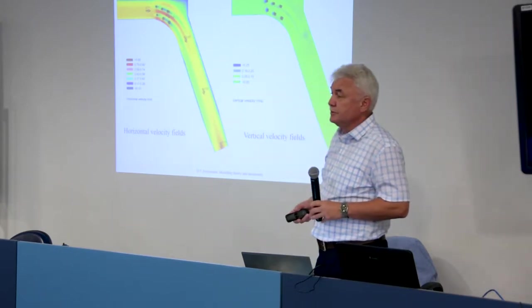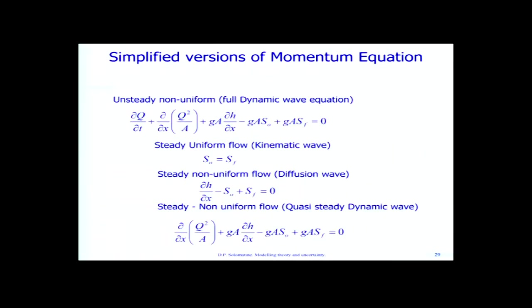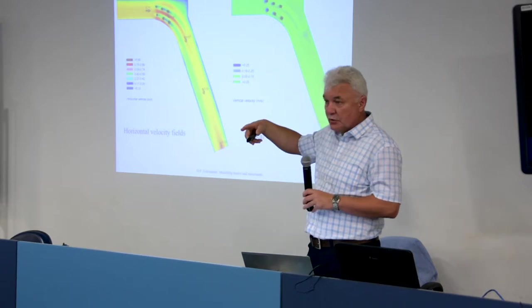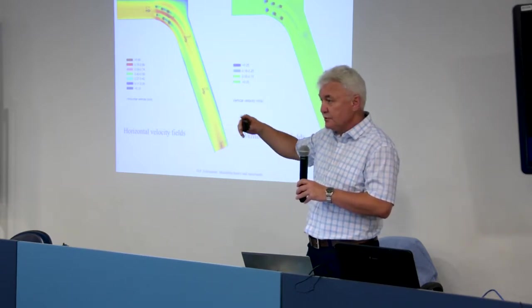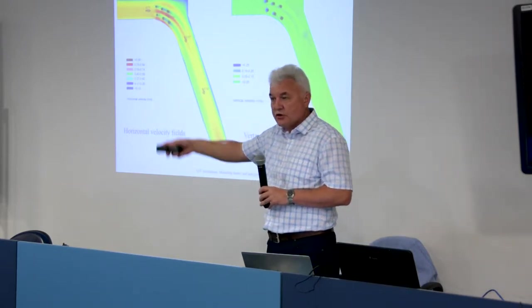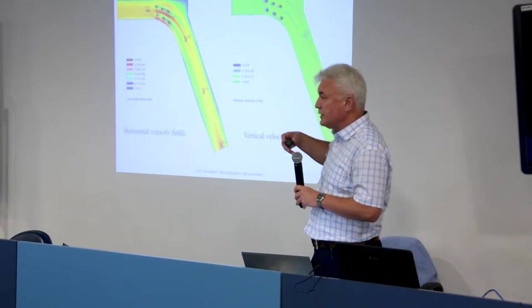When do we need 3D models? Often, for rivers, we need to solve some of the equations, often in simplified form. But if you want to increase complexity and accuracy of the model, you have to increase complexity of equations, and you may end up with the need to solve 3D equations.